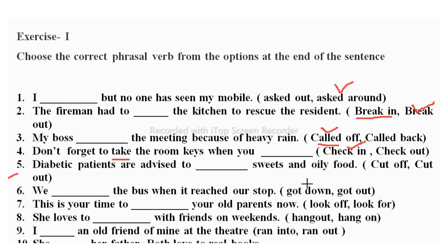Fifth sentence: 'Diabetic patients are advised to dash sweets and oily food.' Options are 'cut off' or 'cut out.' 'Cut off' means to stop or make an end of something, while 'cut out' means to reduce the size. Since patients are advised to stop sweets completely, the correct answer is 'cut off.'